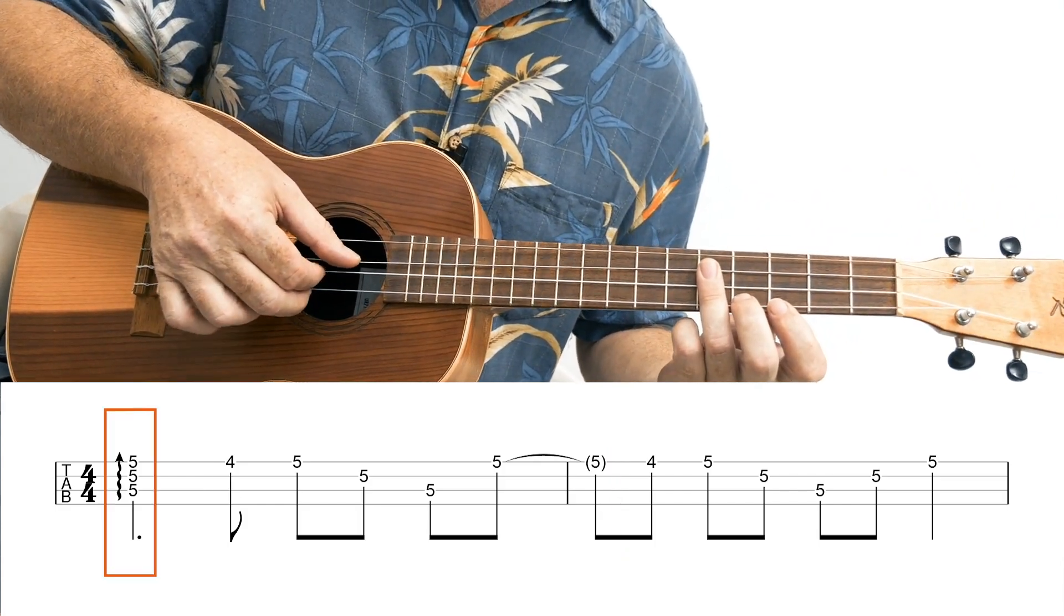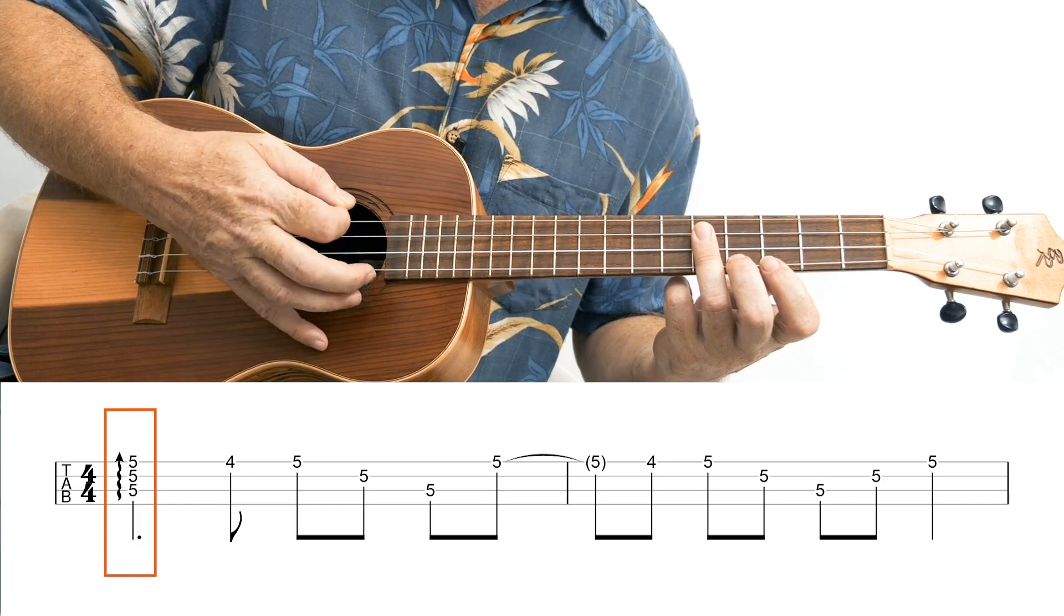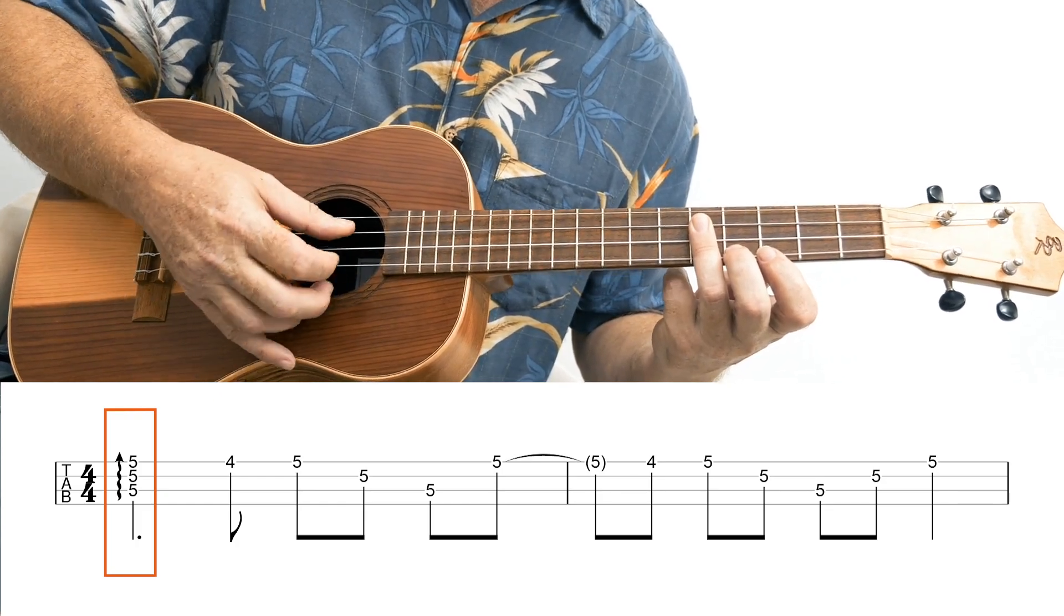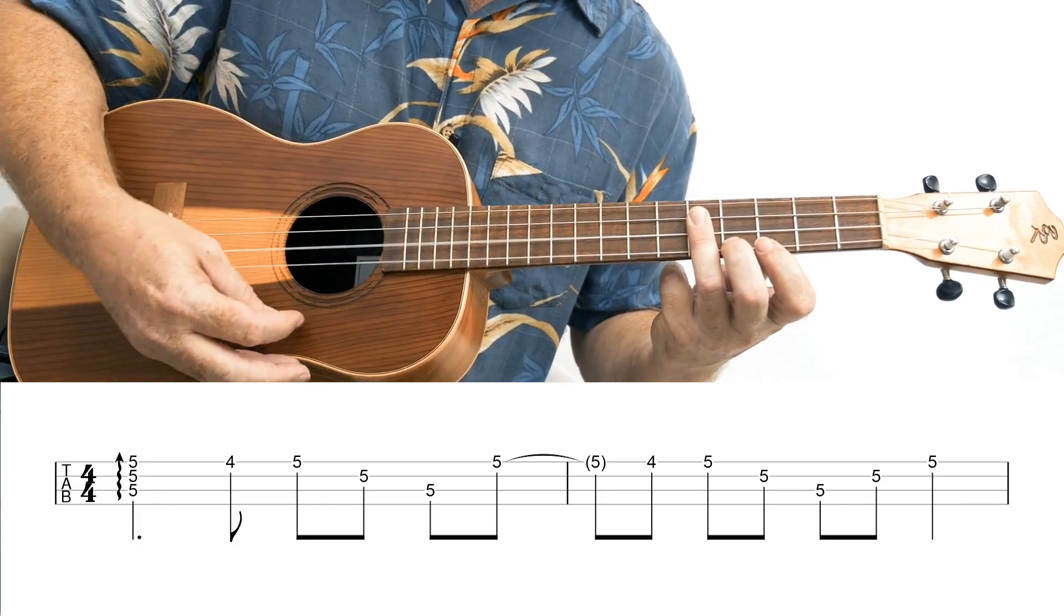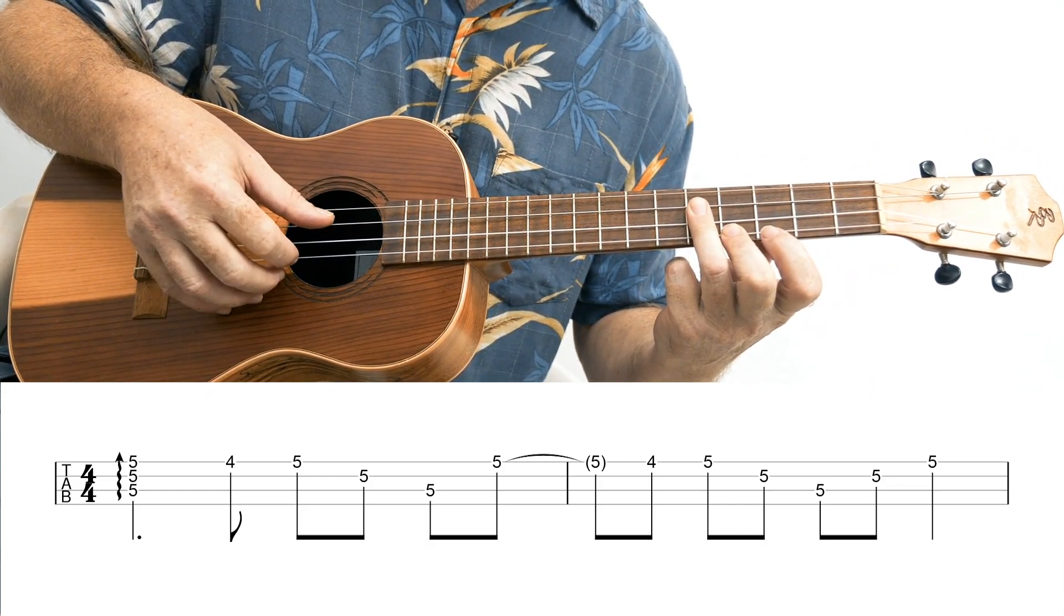So the first bit is a... If it was a pick, it'd be called a rake where you... You can do it with your thumb. I'm finding I get the pace if I use those three fingers like so.